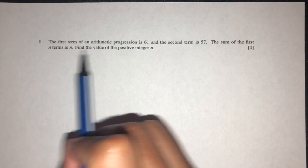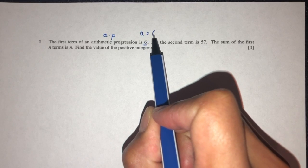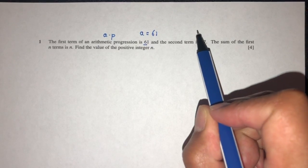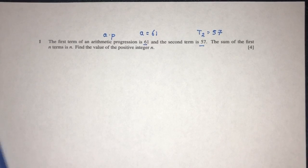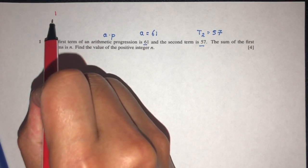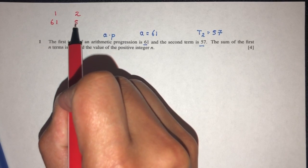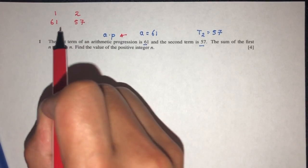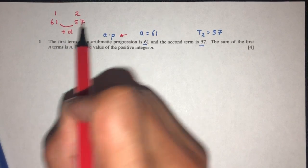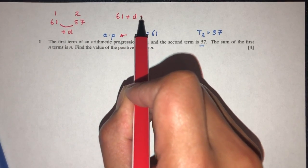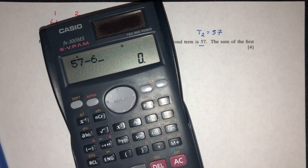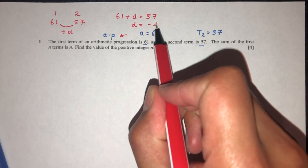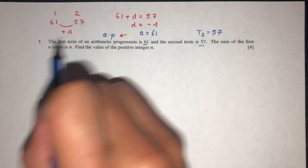In this question, we have the first term of an AP, so we know it's an AP, is 61. The second term is 57. One thing we can derive right away is that if the first term is 61 and the second term is 57, and we know it is an AP, they must have a common difference. So 61 plus D is supposed to be 57, so D will be 57 minus 61, that should be minus 4. We can derive D is minus 4 from this information.